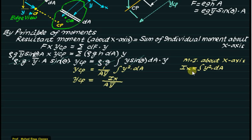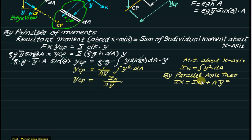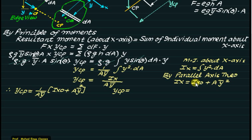By the parallel axis theorem, Ix = Ix0 + A × y-bar², where Ix0 is the moment of inertia about the central axis. Substituting into the expression for y_cp: y_cp = (1 / (A × y-bar)) × (Ix0 + A × y-bar²). Simplifying, the A cancels one y-bar term, giving y_cp = y-bar + Ix0 / (A × y-bar).